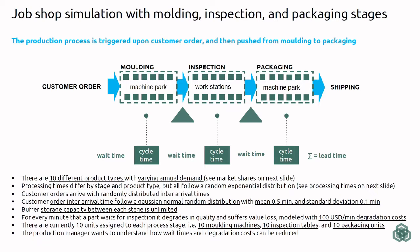We want to get a rough idea of where the bottleneck is in this production system and how we could improve it. There is also a way to calculate costs associated with buffering. In this case, the only cost related to warehousing inventory we are considering is degradation costs. In between molding and inspection, there is a degradation cost — the longer a product has to wait for inspection, the greater the degradation cost. It is calculated here as $100 US dollars per minute of wait time.